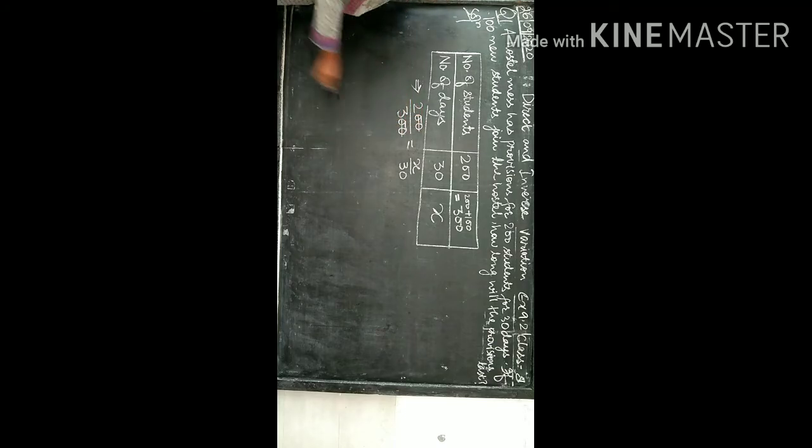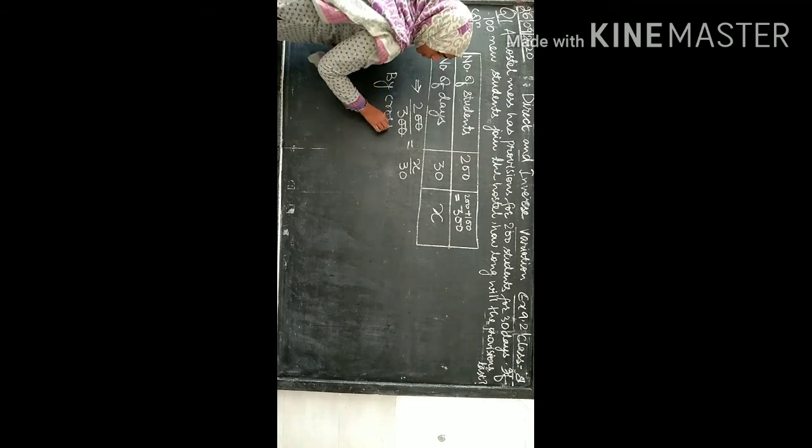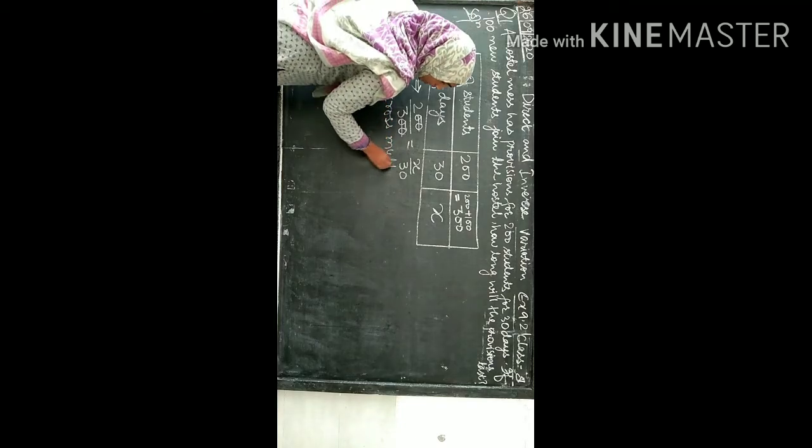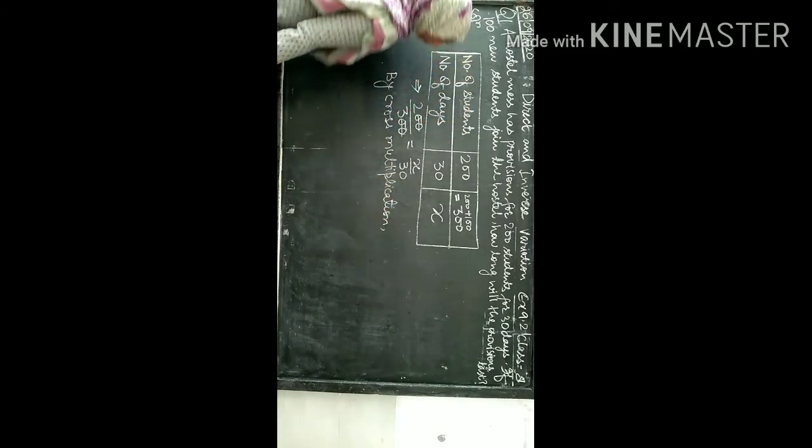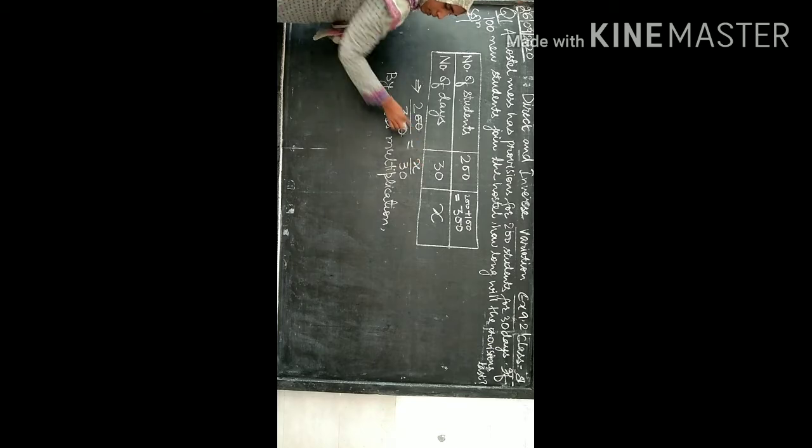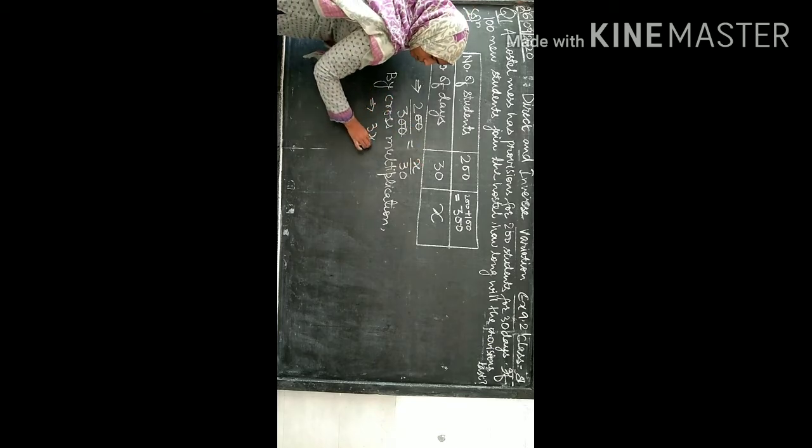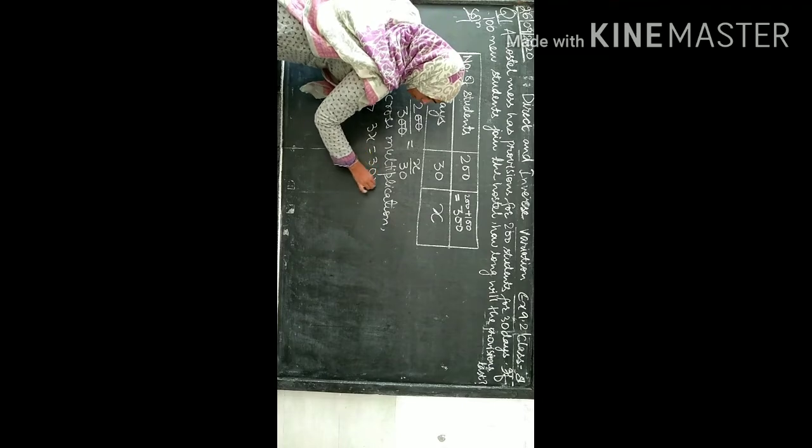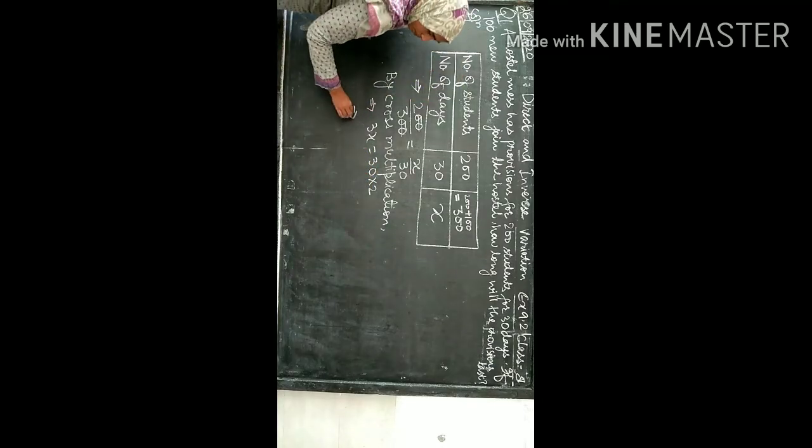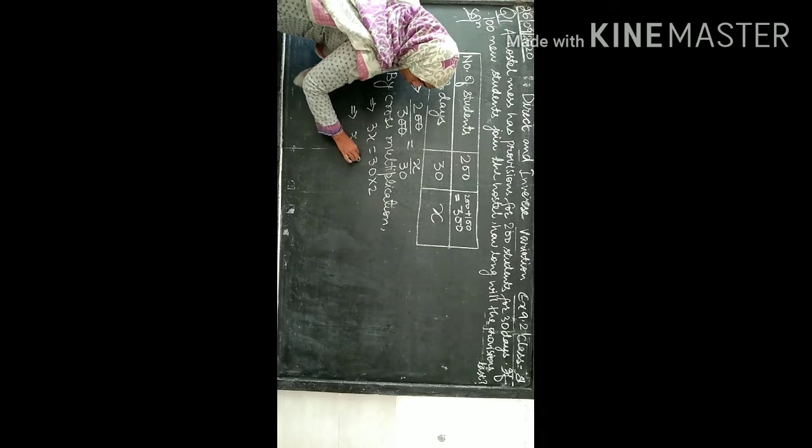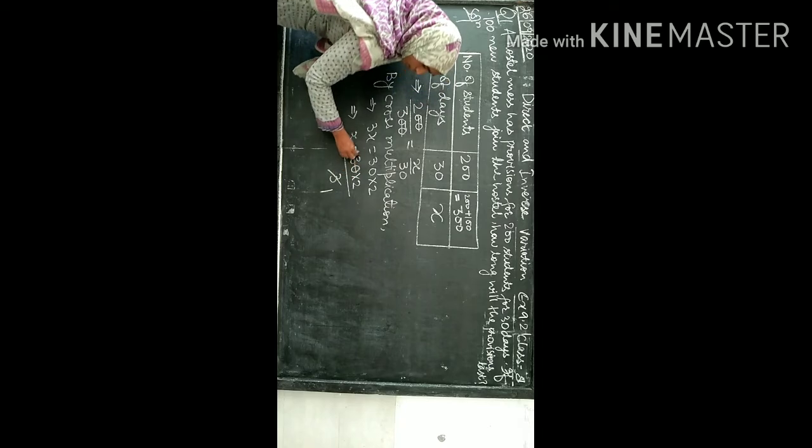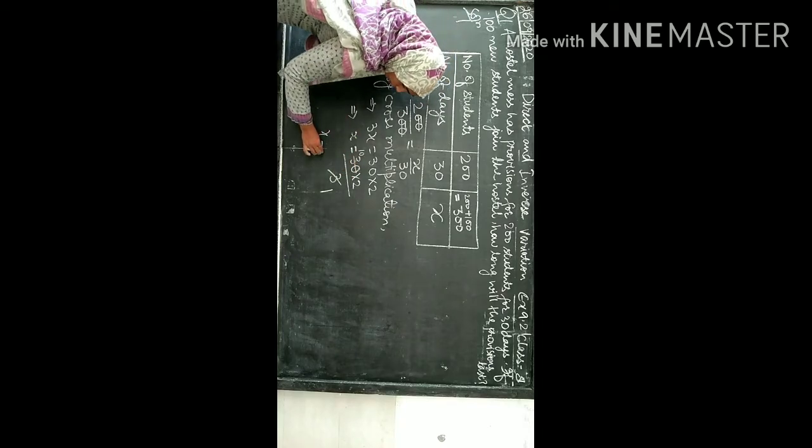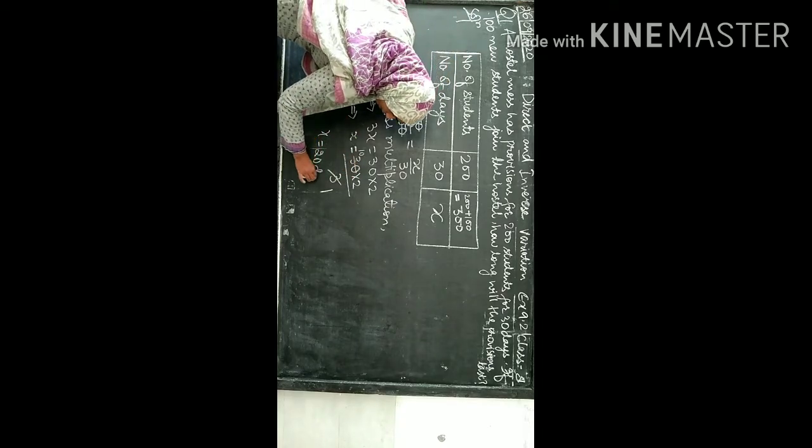200, 200 cancel the inverse and direct relation ratio. Cross multiply: 3x is equal to 30 into 2, so x equals 30 into 2 upon 3. 3 and 3 cancel, and x is 20 days.